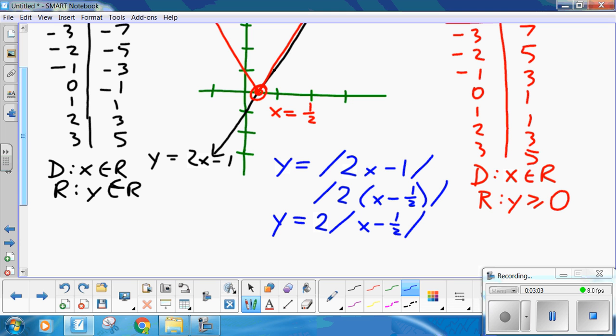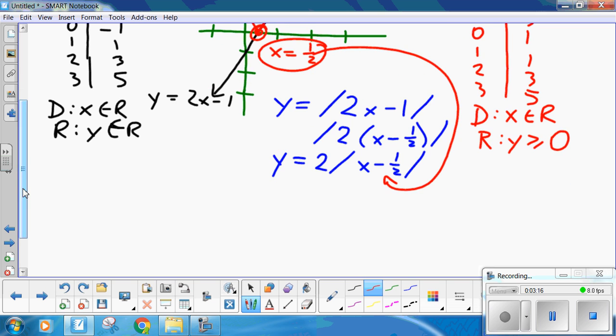So you've got a slope of 2. And look at your critical value. x minus 1 half equals 0. Set it equal to 0 and solve. Now, so you can algebraically find your critical value.